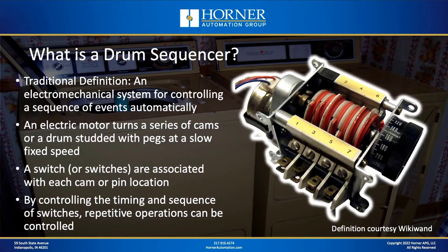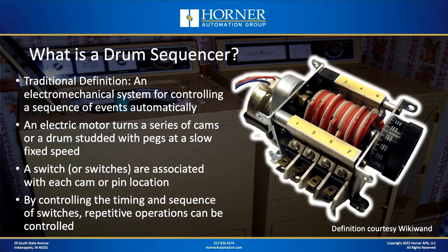So what is a drum sequencer? The traditional definition is an electromechanical system for controlling a sequence of events automatically. The way they were constructed: they consisted of an electric motor that turned either a series of cams or a drum studded with pegs. The cams or drum were turned at a consistent slow speed, and as they turned, a series of switches were associated with each cam position or pin location. By controlling the timing and sequence — where cams line up and where pins are installed — repetitive operations can be controlled.